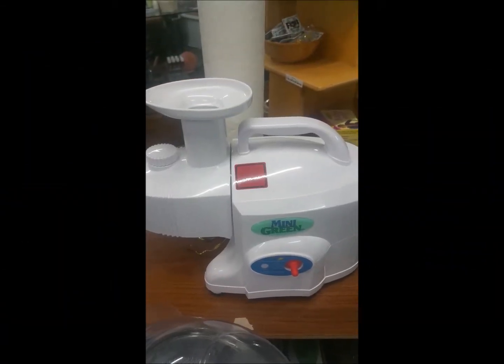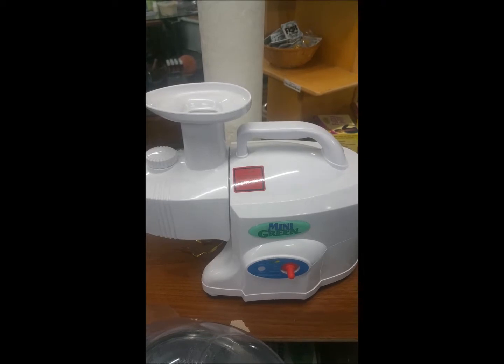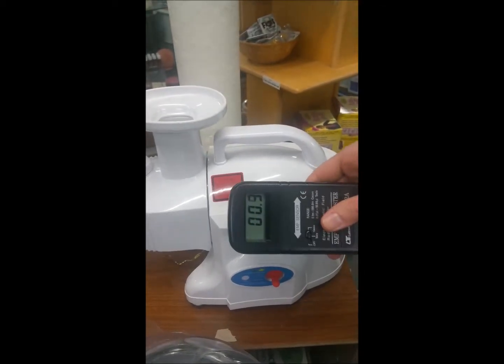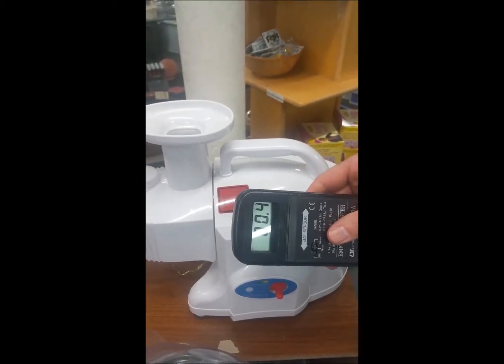We are in front of the mini green power juicer at the Momentum98.com natural health store. And here, we'll put the EMF meter on it. And you see it's 0.3, 0.5, 0.4, 0.3, and that's because of the building we're in.